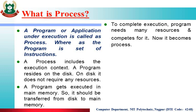To complete the execution, a program needs many resources and competes for them — now it becomes a process. When our program is in execution state, it will need a number of resources. Using those resources, our program will completely execute. The program becomes a process, and to execute, the operating system provides it with the required resources.